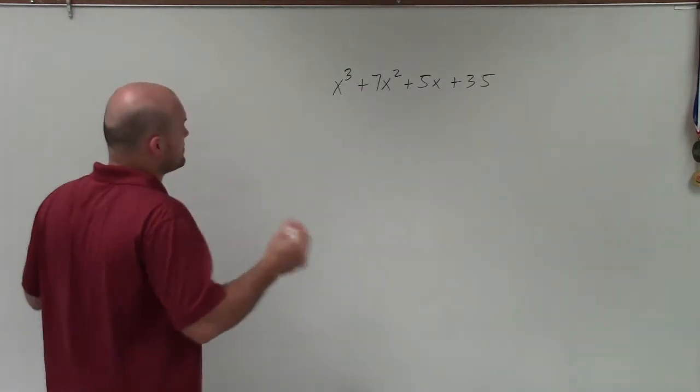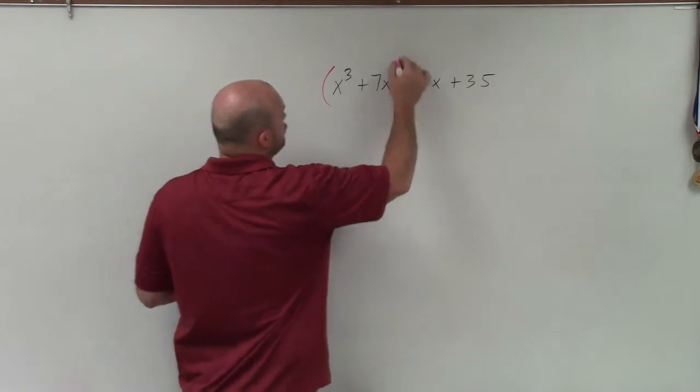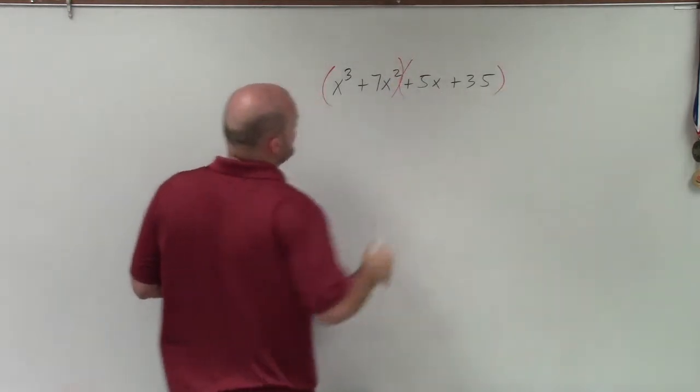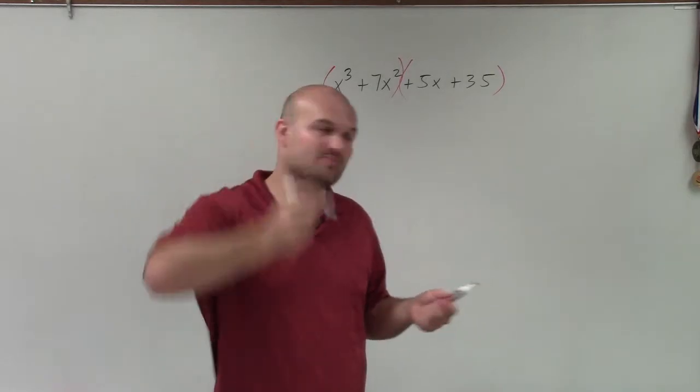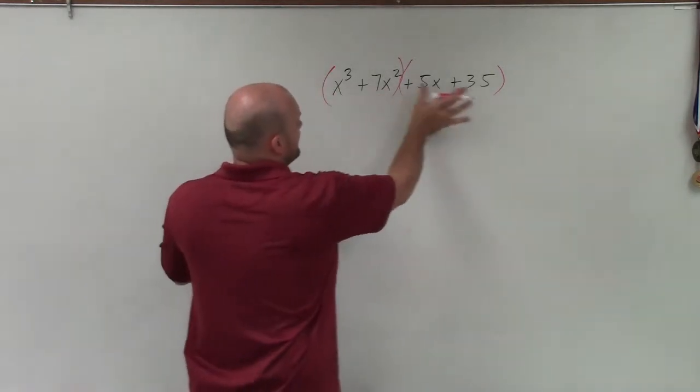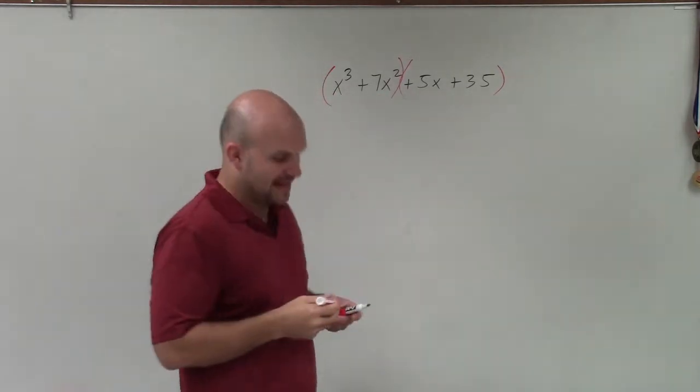So factoring by grouping, what we're simply going to do is we are going to group the first two terms. And the way that we group them is by parentheses. So I just insert parentheses inside of each of the first two and the last two terms.